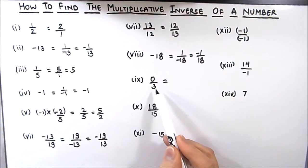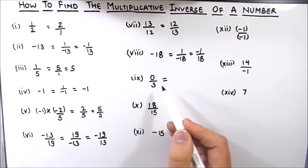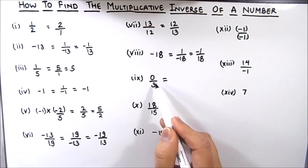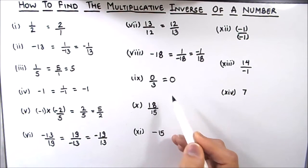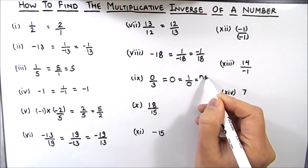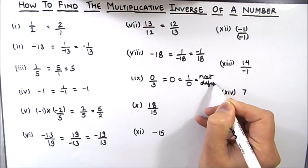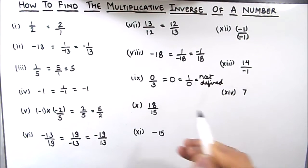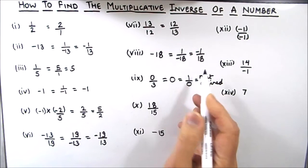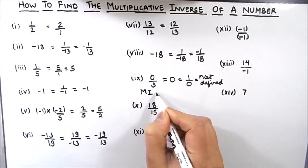Now this is a very interesting example. We see that the number is 0 divided by 3, and when we simplify it we are going to get 0. The reciprocal of 0 is not defined, or does not exist. So the multiplicative inverse of 0 does not exist.